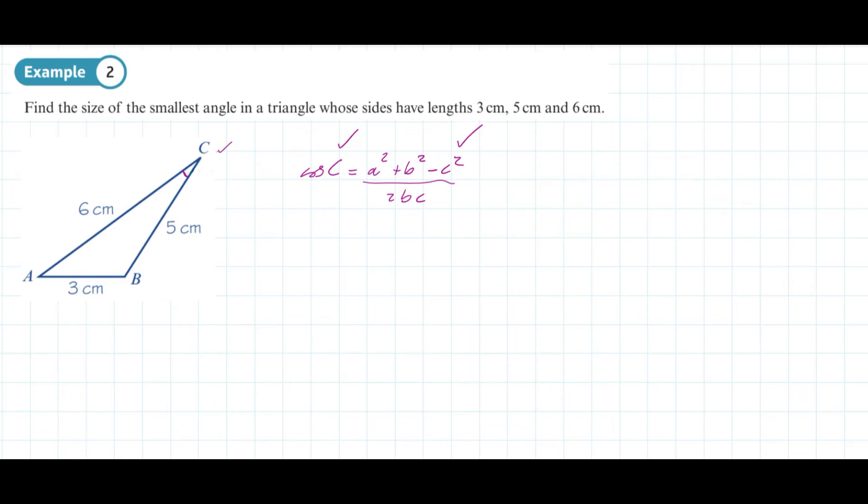Let's continue with that. Cosine C equals 5² plus 6² minus 3² over 2 times 5 times 6. Let's start to work that out.